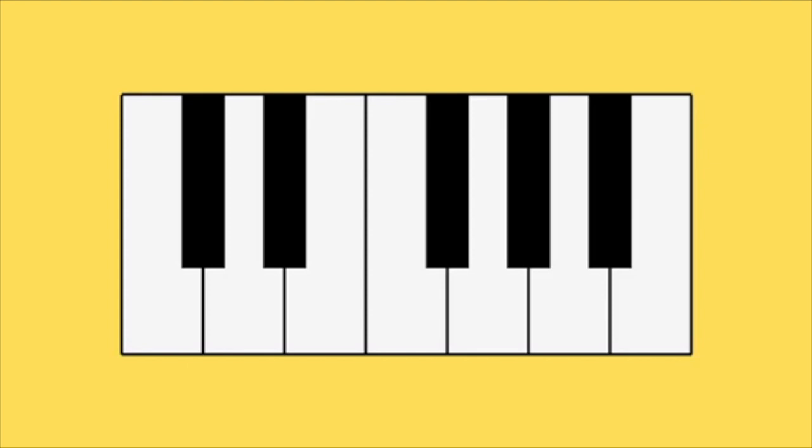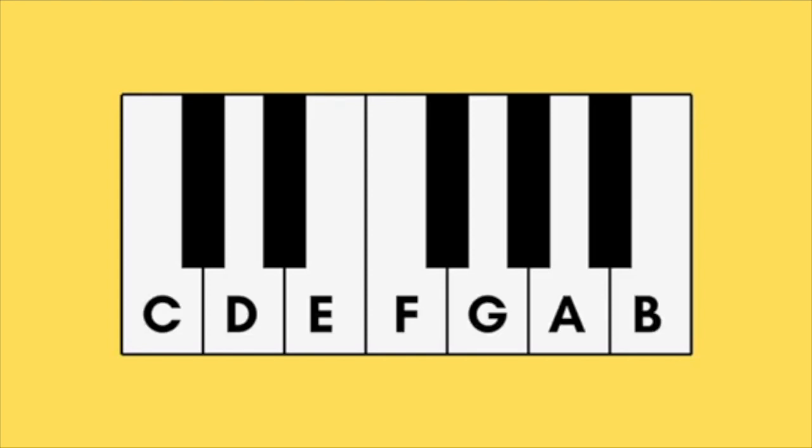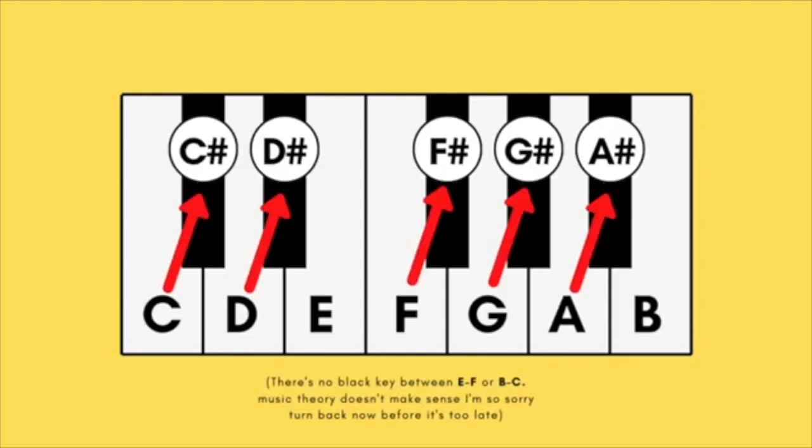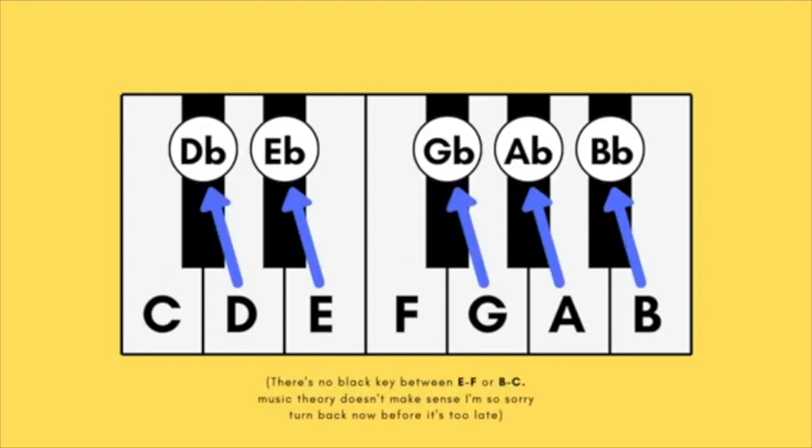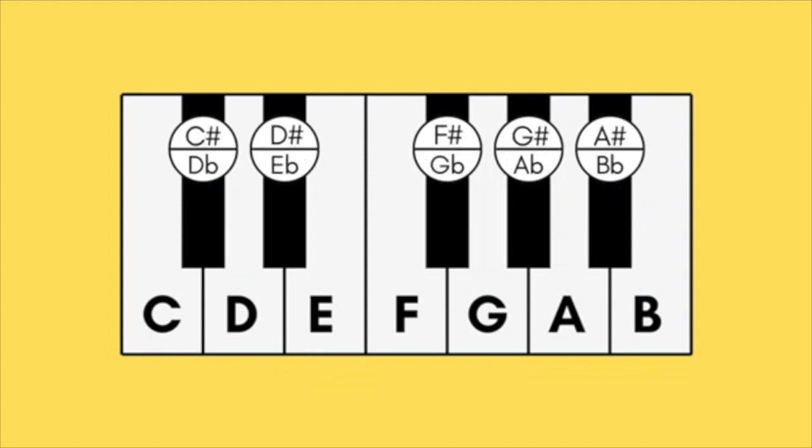So knowing what we do now, these are the names of the white keys, these are the sharp names of the black keys, these are the flat names of the black keys, and this is what it looks like all together.